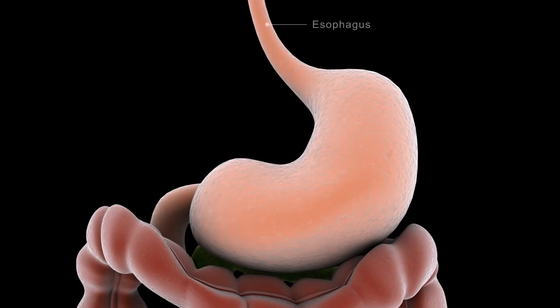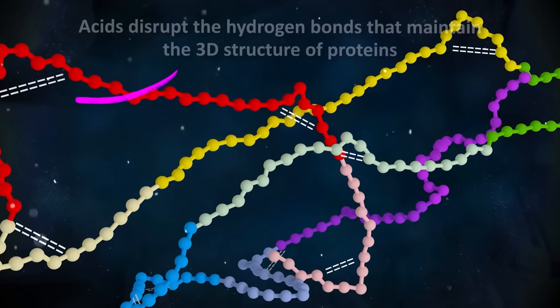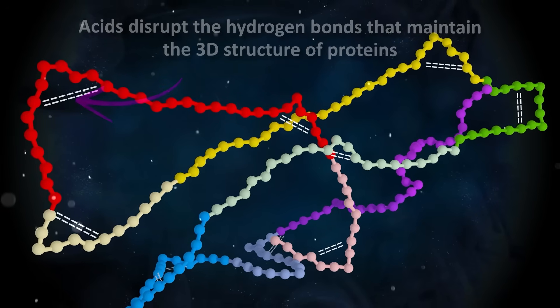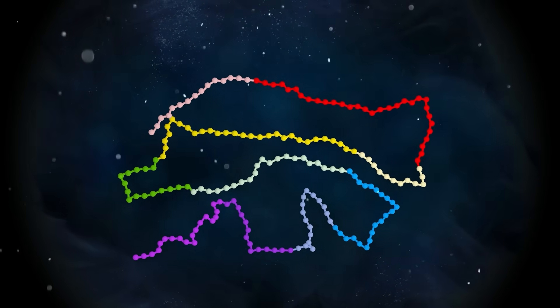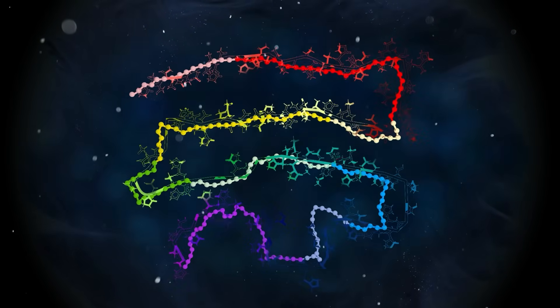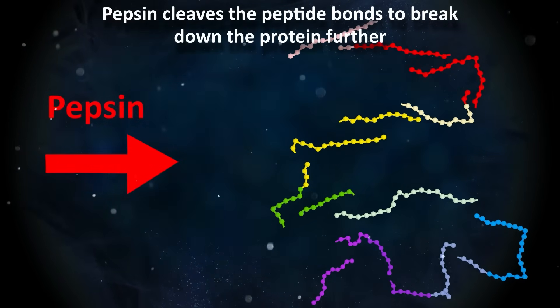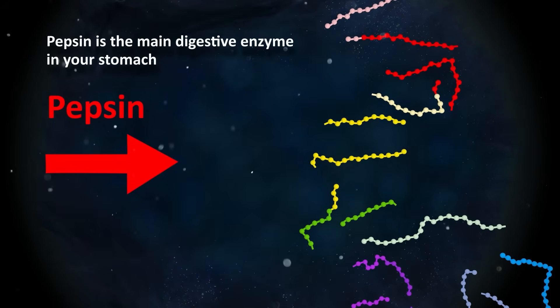That's what makes HCl a strong acid, and this proton transfer plays a key role in both industrial and biological processes. In your body, stomach acid — which is mainly hydrochloric acid — helps digest proteins. Hydrochloric acid breaks protein bonds, disrupting the weak hydrogen bonds that maintain a protein's three-dimensional structure. This essentially unfolds or denatures the protein, exposing the polypeptide chain and making it more accessible to digestive enzymes like pepsin, which can then cleave the peptide bonds to further break down the protein into smaller amino acid chains that can be more easily absorbed by your body.